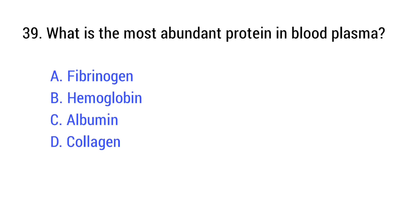Question number 39. What is the most abundant protein in blood plasma? The right answer is option C: Albumin.